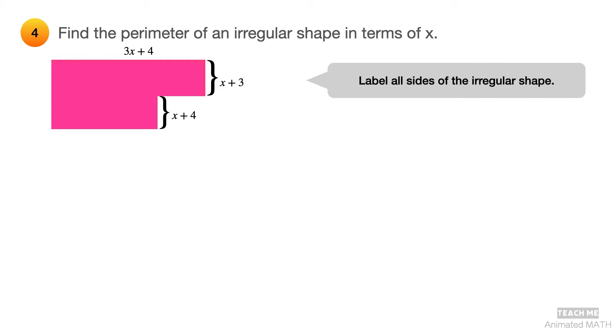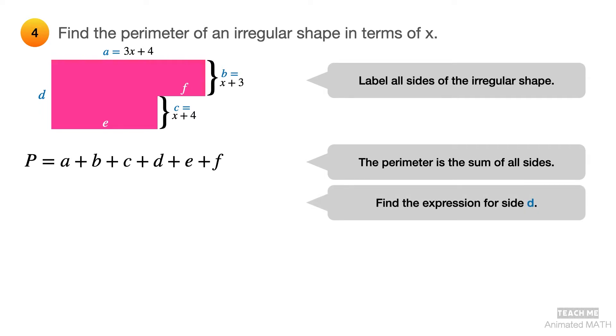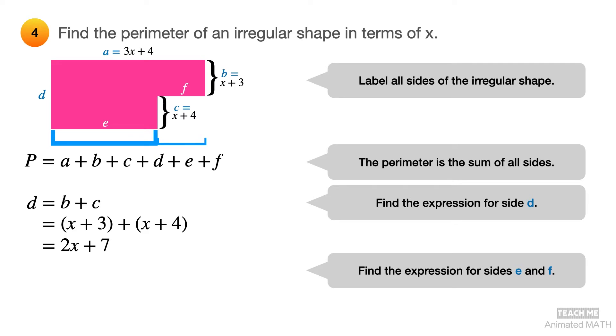Start by labeling all six sides of the irregular shape. The perimeter of this irregular shape is the sum of all six sides. Although there is no given value for side D, you can find it by projecting the length of both sides B and C in a single vertical line. And if you think about it, side D is actually just the sum of sides B and C. And finding the expression for sides E and F can be done similarly. By projecting the length of both sides E and F in a single horizontal line, you'll find that their sum is equal to the length of side A.